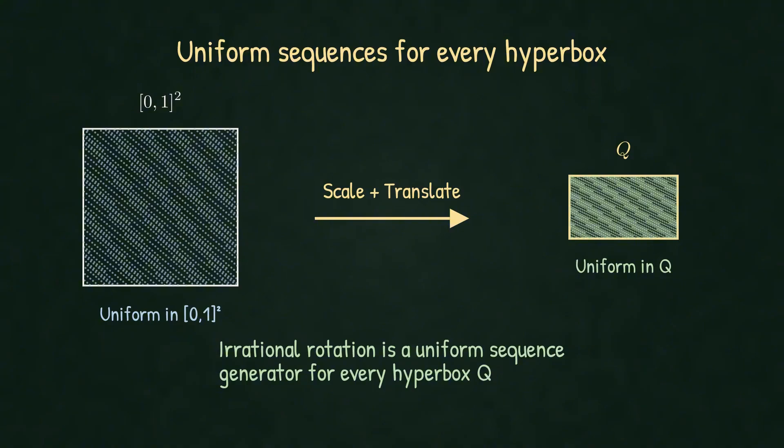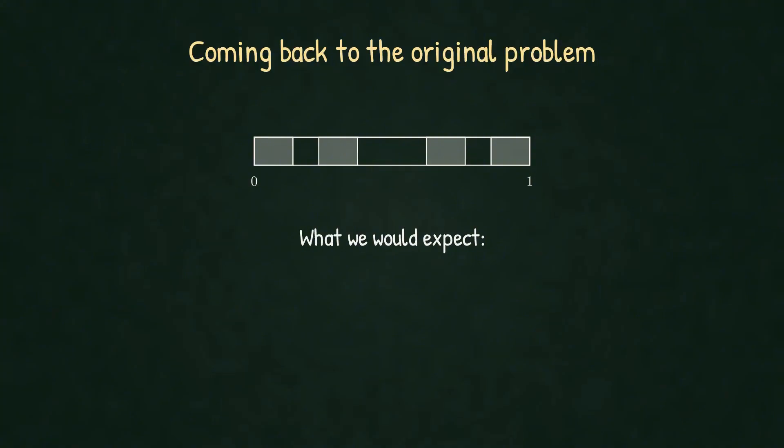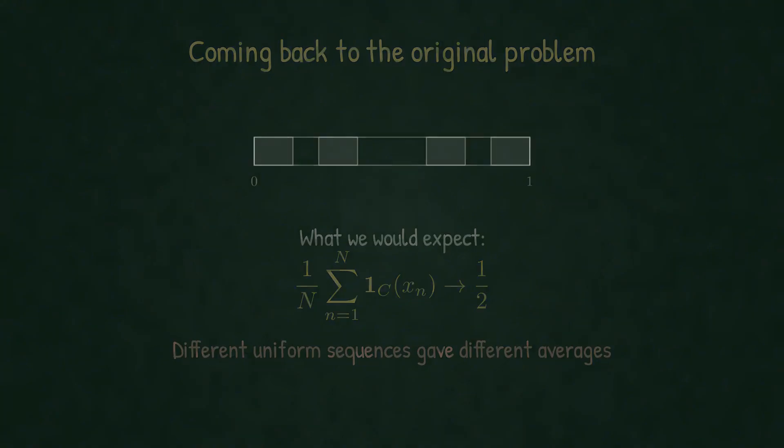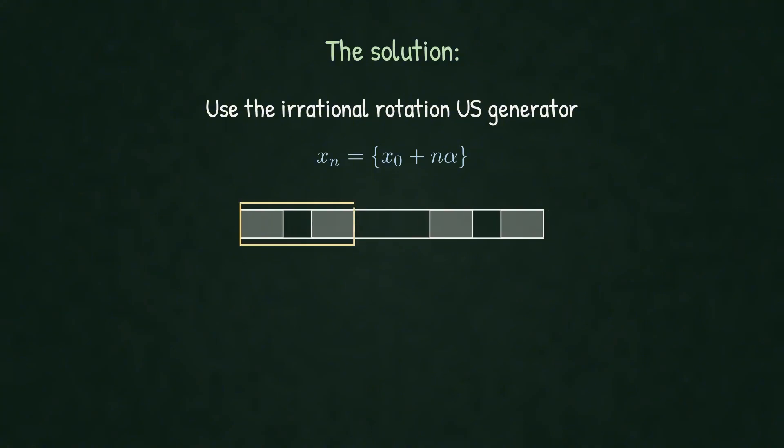Now we can solve the fat Cantor problem. Recall: as we generate more points using our deterministic sequence, the proportion that fall inside the Cantor set on intervals should approach one half. But with arbitrary uniform sequences, we couldn't guarantee this. Now, using irrational rotation, for every starting point x0, the sequence is uniformly distributed in the space.